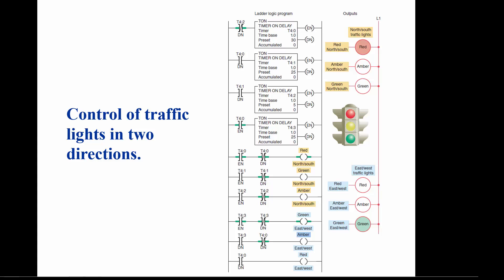This ladder logic program is designed to control a traffic light in two directions. Four TON timer instructions are used. The first three timers are cascaded and turned on by the done bit of the previous timer. The done bit of T4:2 resets and turns on T4:0 to repeat the cycle. Timer T4:3 is started at the same time as T4:0. The first four lights are controlled by an examine-if-closed address to the timer's enable bit ANDed with an examine-if-open address to the timer's done bit.